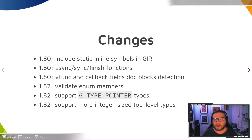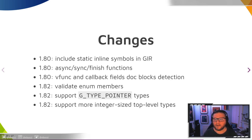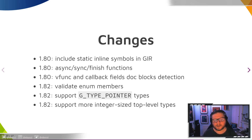These are a bunch of changes that happened in the last cycle and this one. We now include static inline symbols in the introspection data. We include the asynchronous function, the synchronous variant, and the finish function inside both the GIR data and the typelib binary. Vfunc and callback fields now detect the doc blocks that are associated with them, so there is always a fallback. In this cycle for GNOME 47, we are going to validate enum members, we support GType pointer types, and we support integer size top-level types like dev_t, time_t, off_t, and so on.